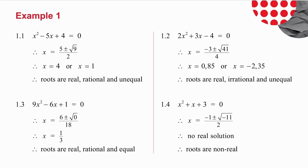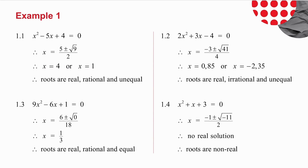In the first question, when you use the quadratic formula, you get that x is 4 or 1. Both of those are real numbers. They're rational and they are unequal — it's two different numbers you're getting.